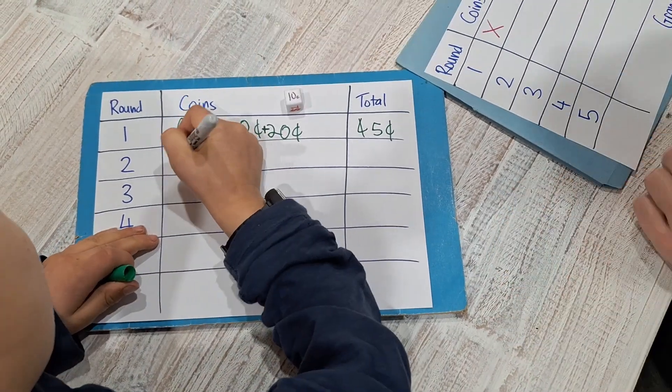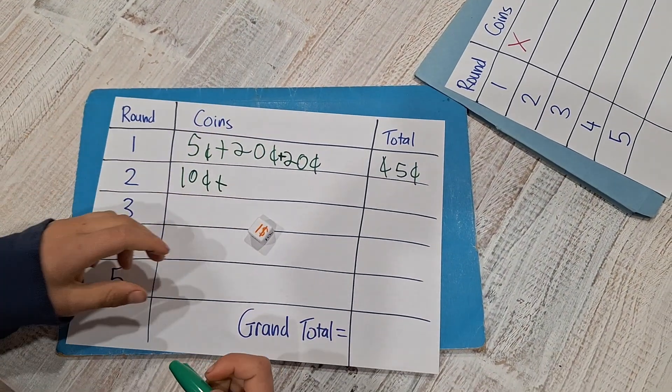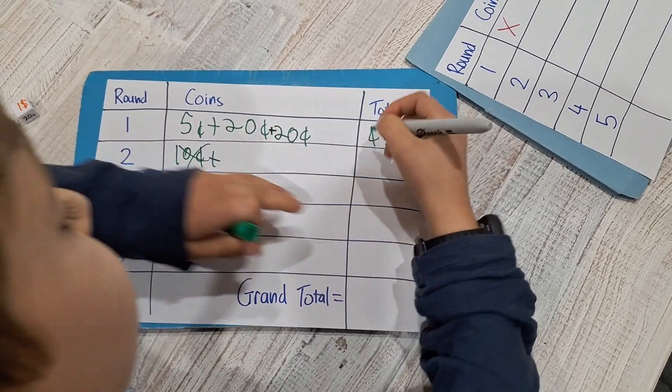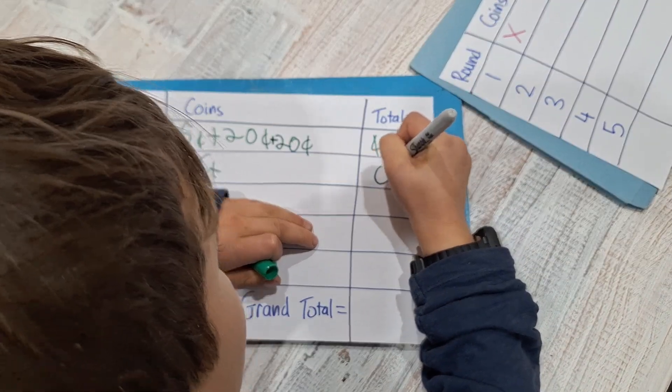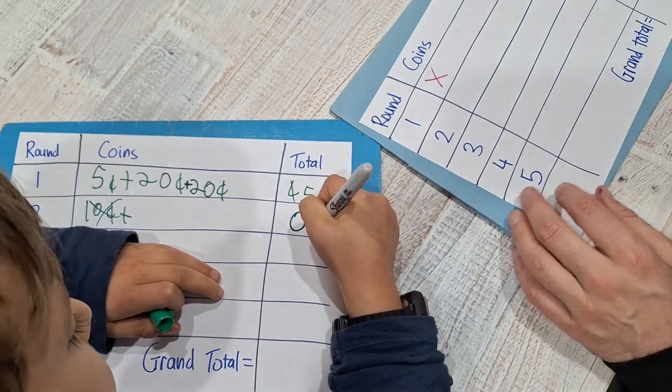10 cents. Plus means he's still going. Okay, cross. And you score. Now, he doesn't lose the 45 cents because he's already banked that. He just loses what he earned that round.